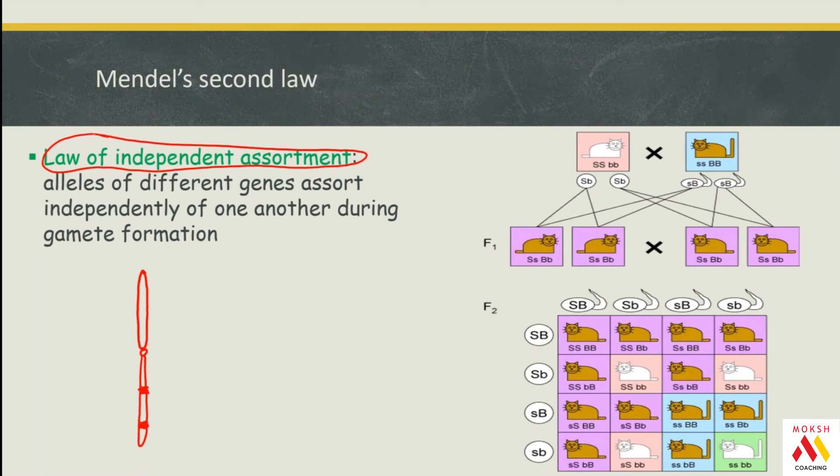I'll draw the paternal chromosome here. This is maternal and this is paternal. We all know in meiosis there is crossing over in prophase I. What happens when there's crossing over? There will be exchange of fragments. See what has happened after the crossover—is there independent assortment? Yes or no?